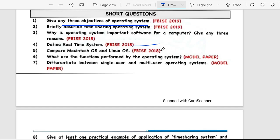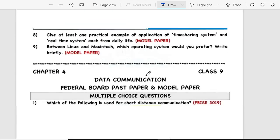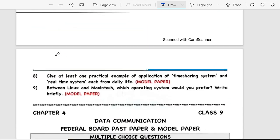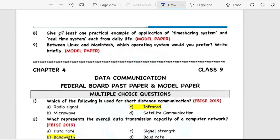Fifth is compare Macintosh OS and Linux OS. What are the functions performed by the operating system? Seventh is differentiate between single user and multi-user operating system. Give at least one practical example of application time sharing system and real time sharing system for each from daily life.